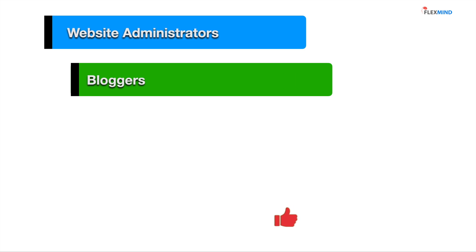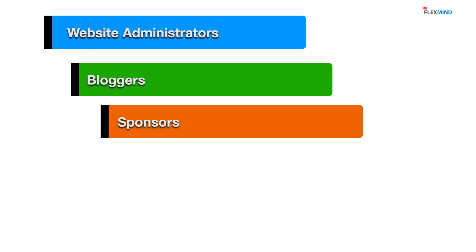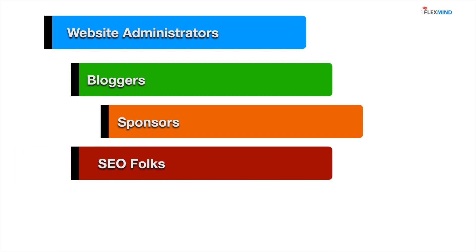Bloggers use it to compare with other blogging competitors. Sponsors use it to find popular sites for sponsored advertisements. SEO folks use it as it helps in their SEO analysis, apart from other metrics like page authority rank and domain authority rank, commonly known as PA and DA rank.